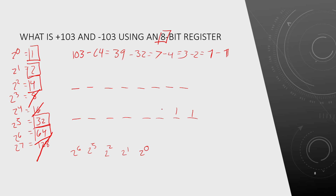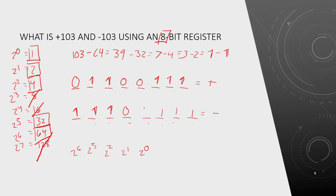We fill an 8-bit register placing 1s at positions 2^6, 2^5, 2^2, 2^1, and 2^0. For positive 103, the leftmost sign bit is 0, giving 01100111. For negative 103, the leftmost sign bit is 1, giving 11100111, and the remaining unused positions are filled with zeros. That is how you perform sign magnitude representation for binary numbers.